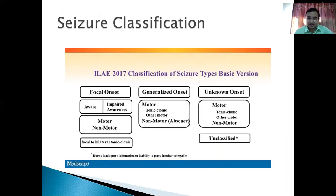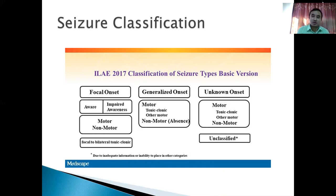This is the recent classification of Caesar. Caesar is classified as focal onset, generalized onset, and unknown onset. Focal means only part of the brain is involved. The patient may be aware or impaired aware, and may have motor or non-motor symptoms, and can progress to focal to bilateral tonic-clonic Caesar. If the patient is aware, it is focal onset with intact awareness; if consciousness is impaired, it is focal onset with impaired awareness.